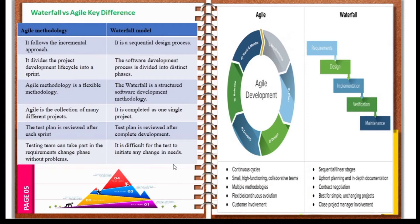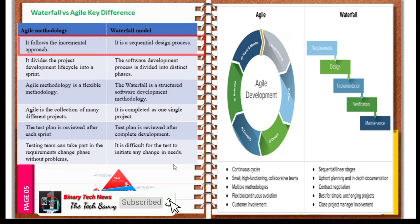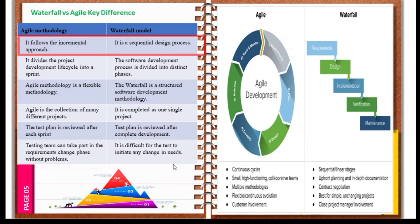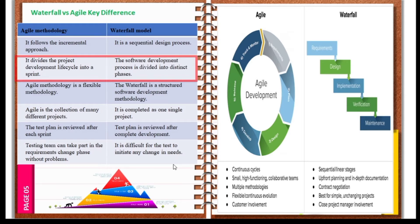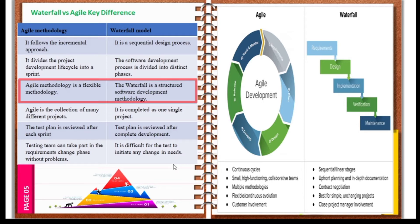Comparing Agile and Waterfall methodology: Agile methodology follows an incremental approach, while Waterfall follows a sequential design process. In Agile, the project development lifecycle is divided into sprints — the project lifecycle is divided into smaller subset phases. In the Waterfall model, the software development process is divided into distinct phases, whereas Agile divides the lifecycle differently.